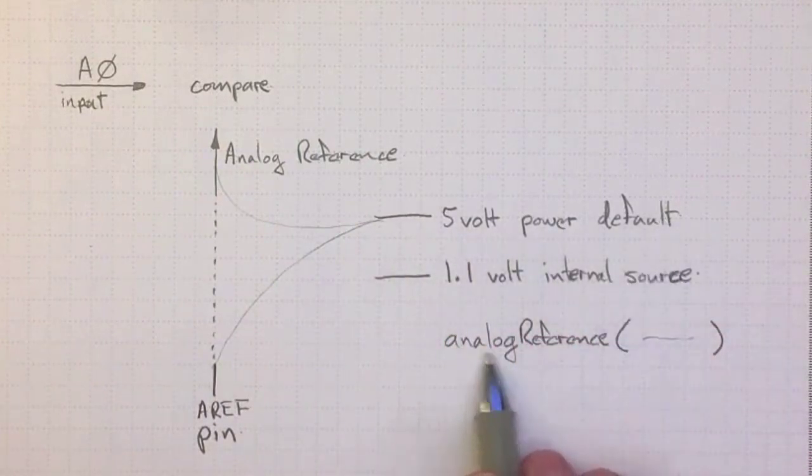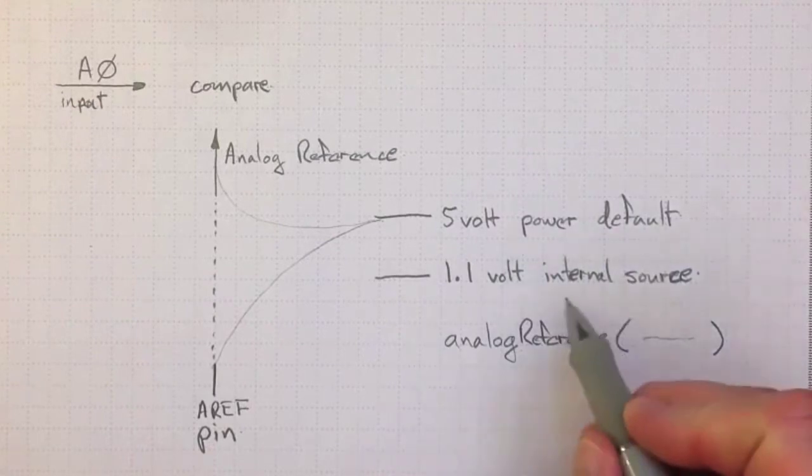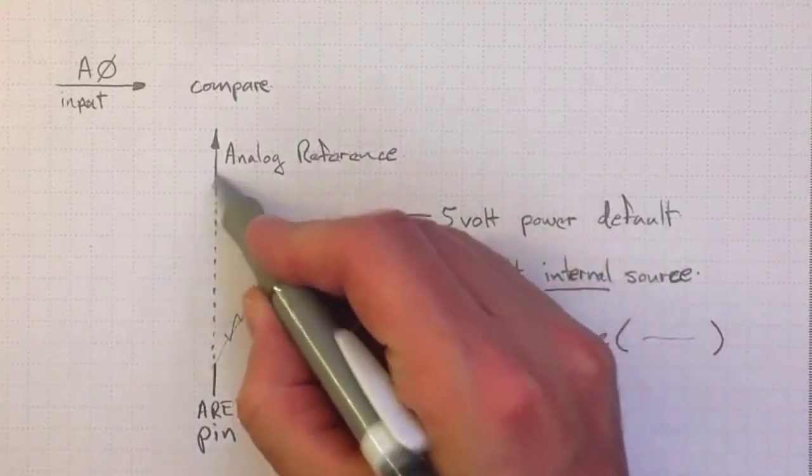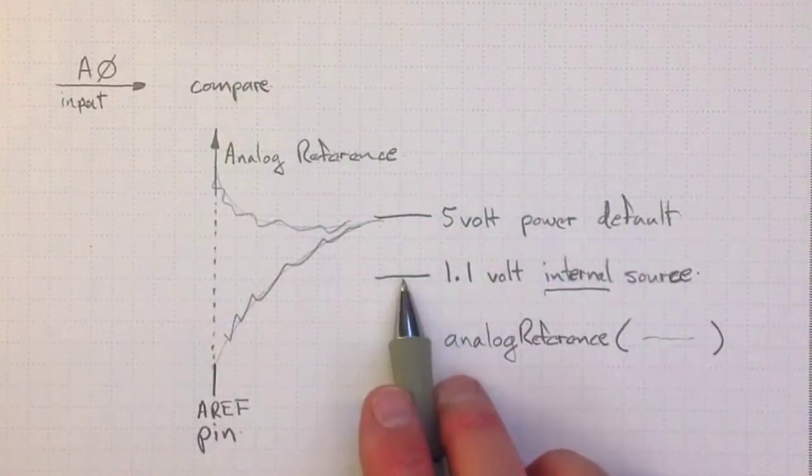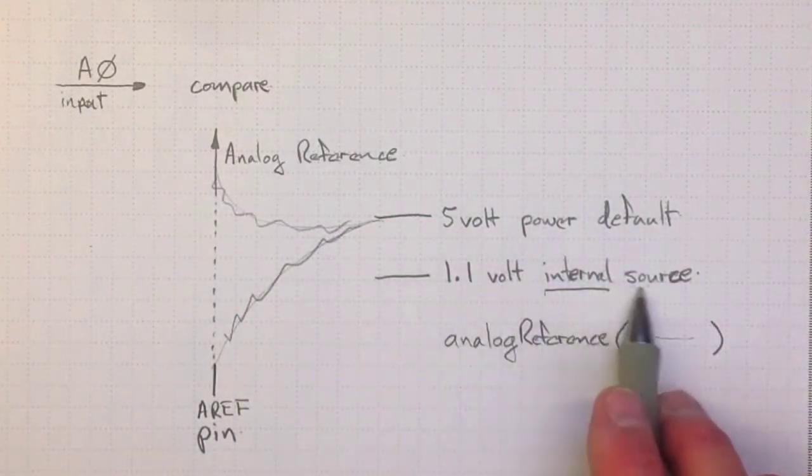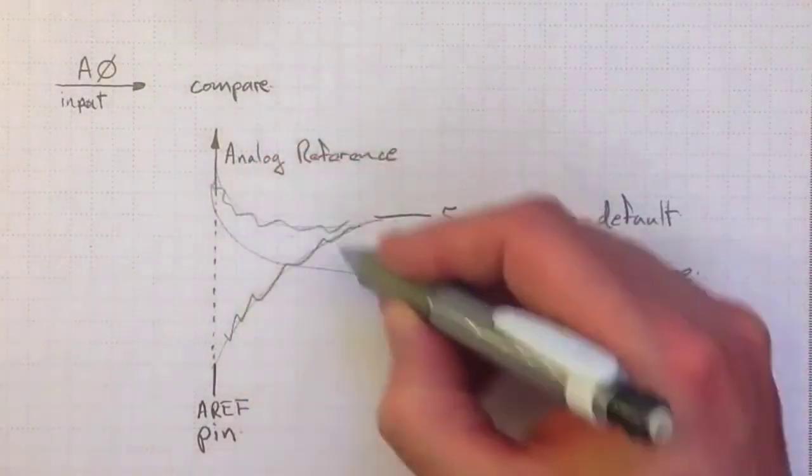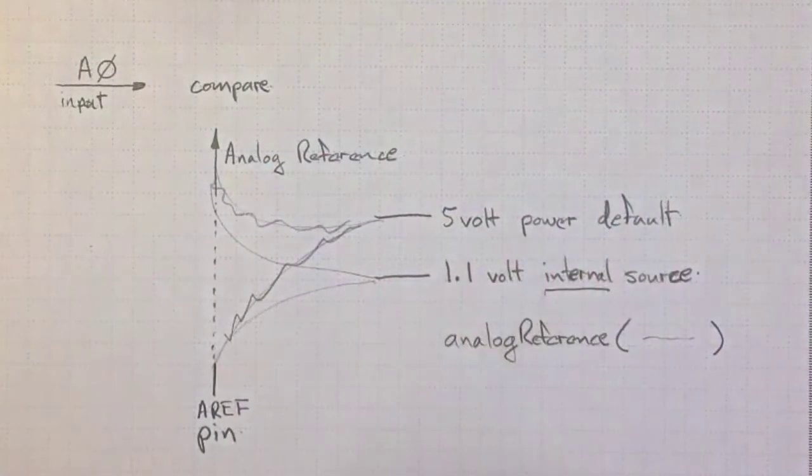If you call it with analog reference internal, instead of connecting the 5 volt source, it will connect the 1.1 volt internal voltage source on the Arduino to the analog reference and to the AREF pin.